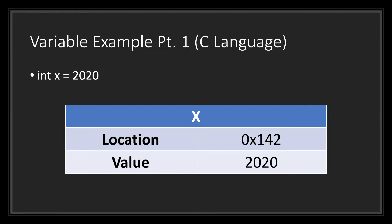Let's see this visually with the C language. We have an integer X which equals the literal integer value 2020. As you can see, our integer X has been assigned a memory address location and has also been assigned its value 2020. So basically, the memory address location holds the value of 2020.